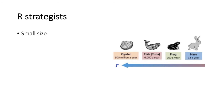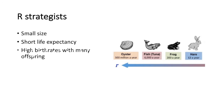One characteristic of R-strategists is they have a small size and a short life expectancy — I call them the YOLO strategists, where they live fast and die young. So they reproduce very quickly. They have very high birth rates with many offspring, though not all offspring will survive. R-strategists don't invest a lot of resources in their offspring; they put more energy towards reproducing because their lifespan is so short.